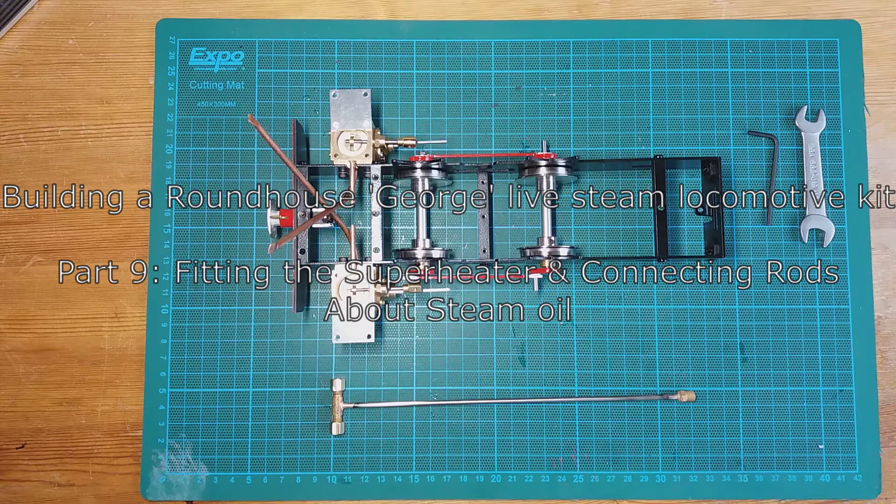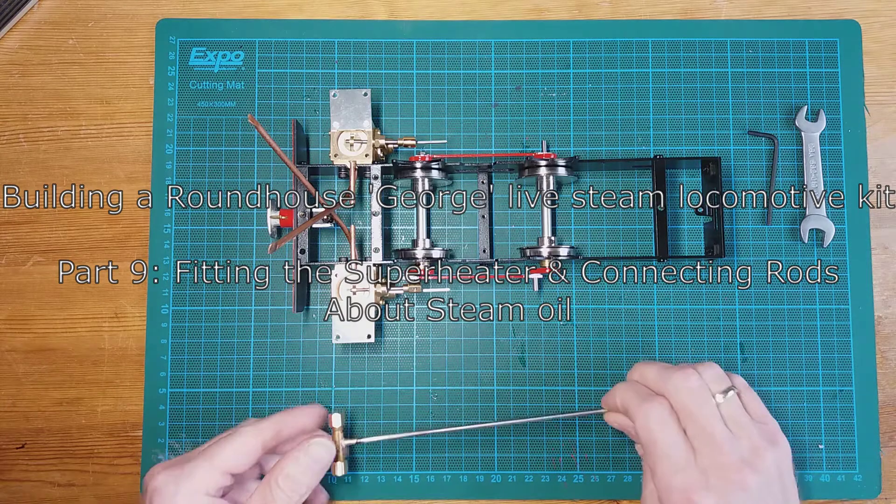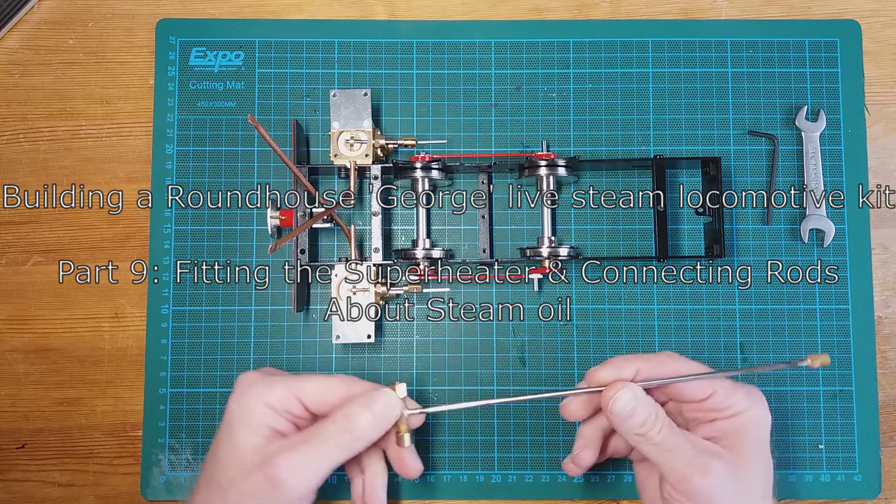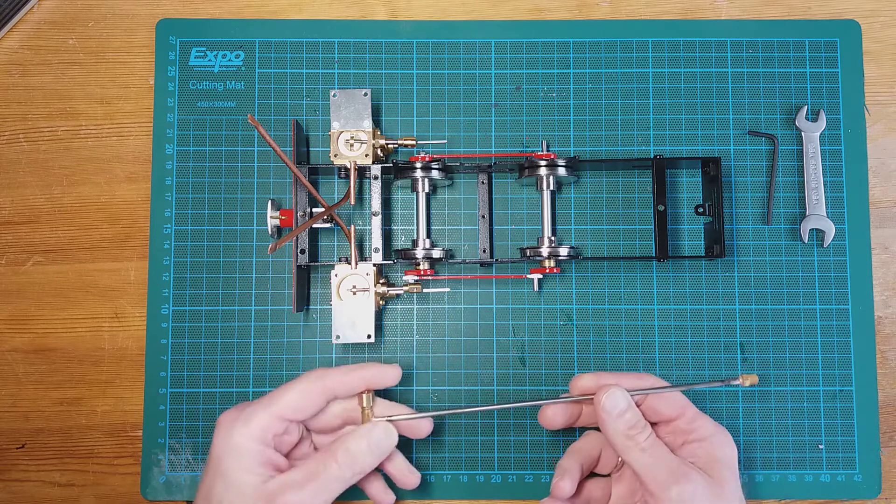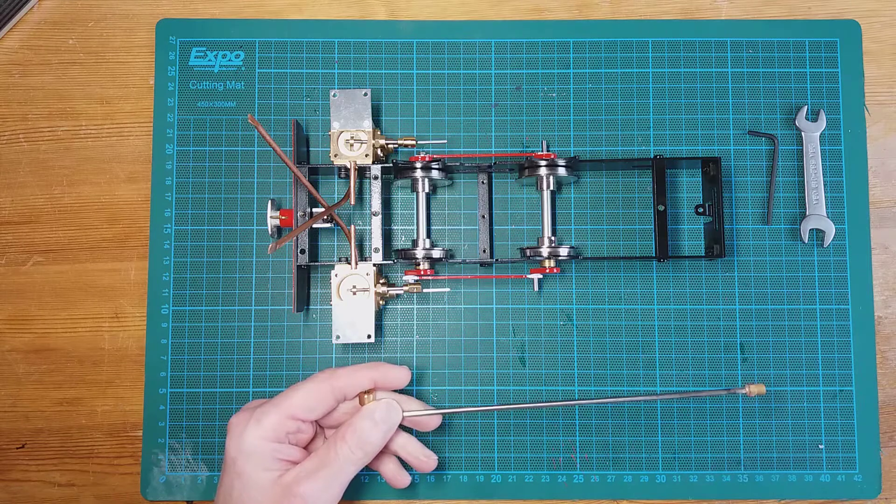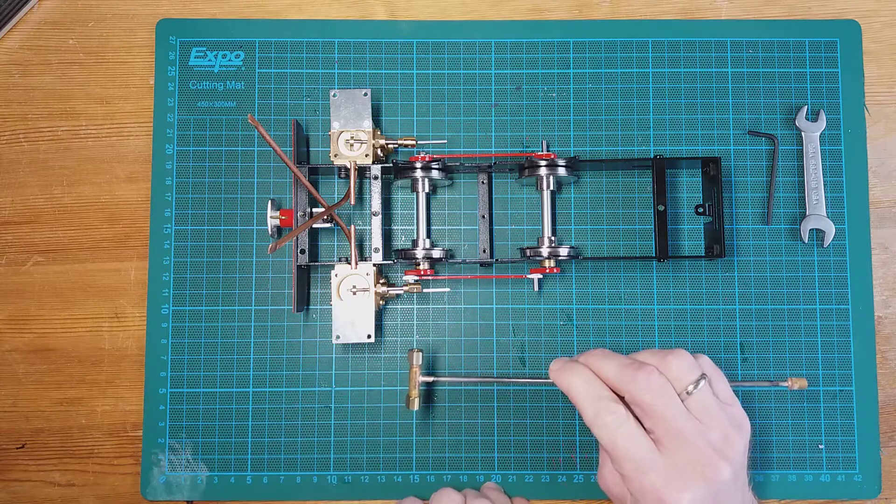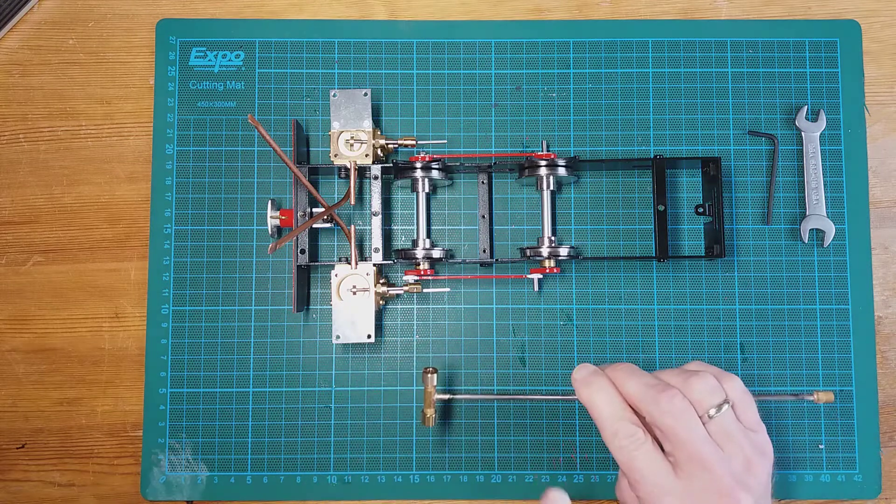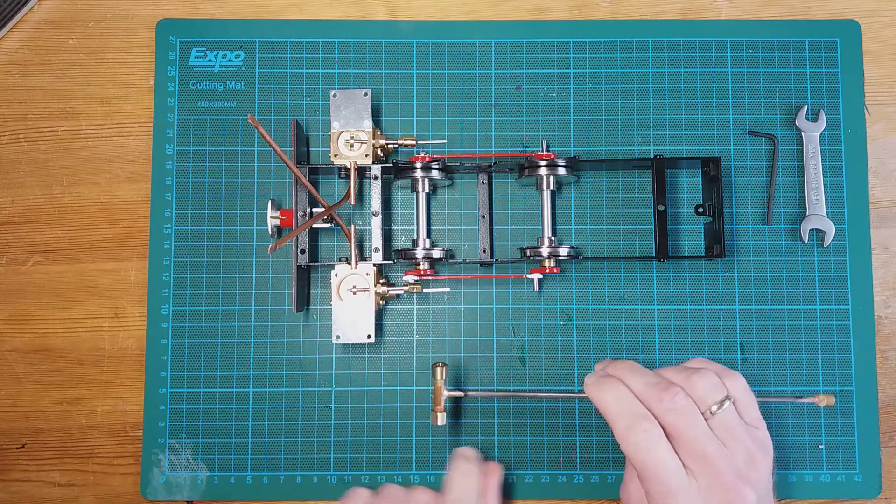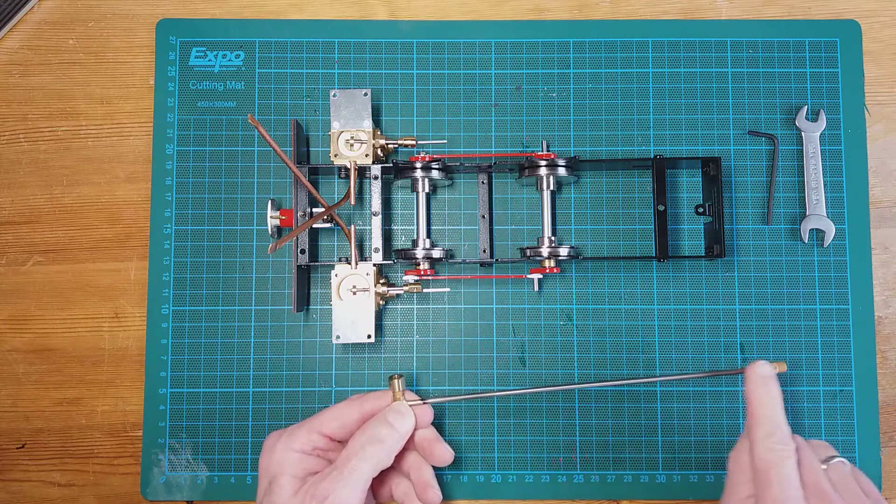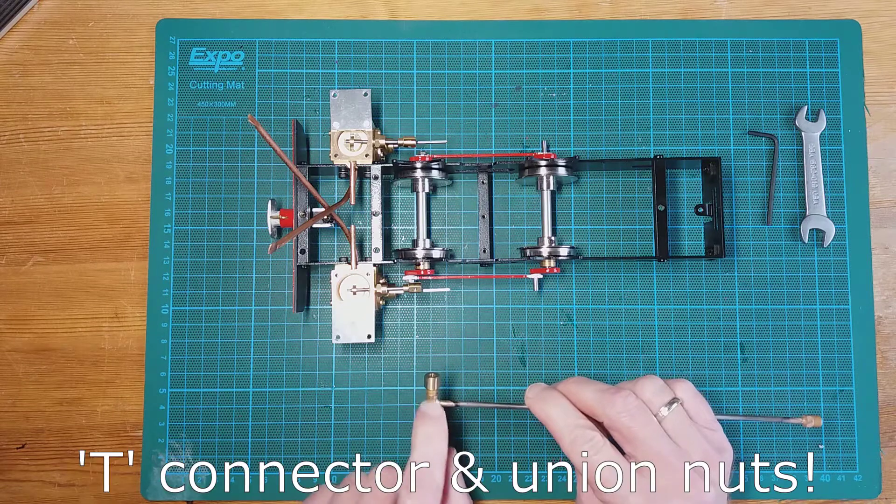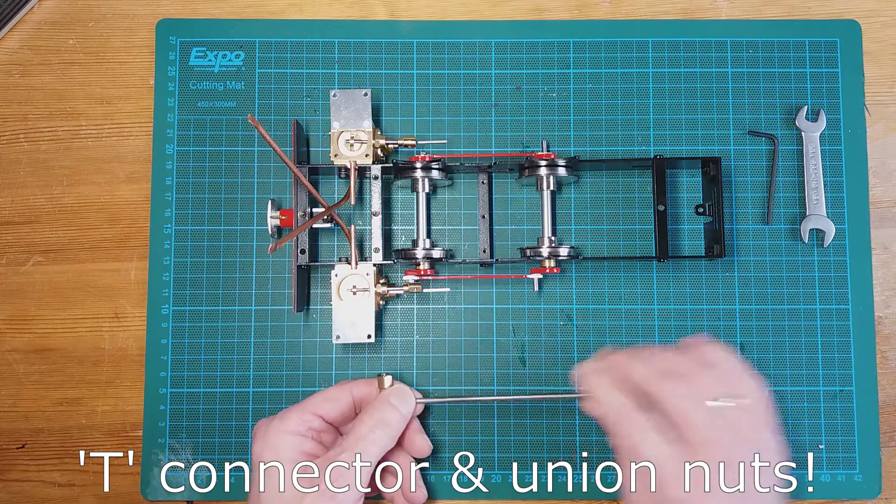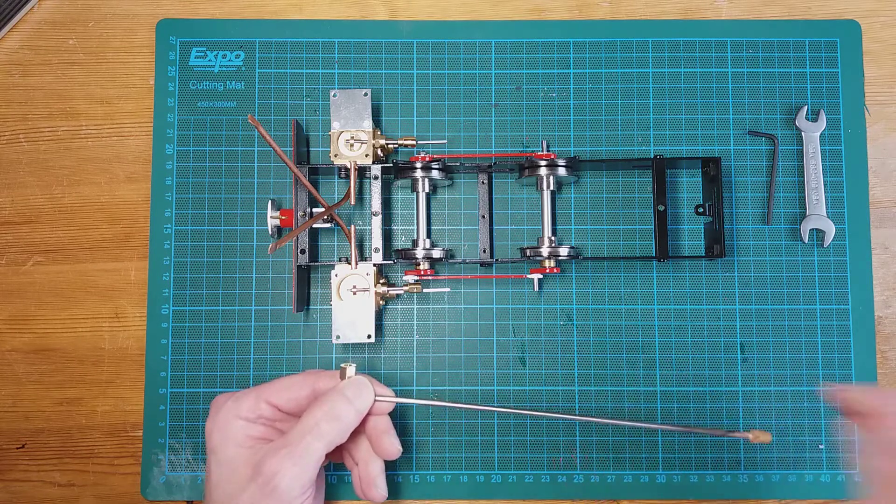The next component we're going to fit is the superheater. In the factory it's silver soldered together, and as you can see there's a central pipe with a T-piece at the end and fixing nuts at both ends.